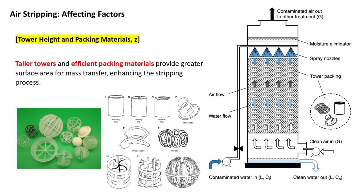Packing materials used in air stripping towers are generally categorized into two types: random packing and structured packing. Random packing consists of irregularly shaped pieces of material that are randomly dumped into the column. Common examples include pall rings, which are cylindrical rings with multiple openings to increase surface area and enhance liquid distribution; raschig rings, which are cylindrical hollow tubes that provide a moderate surface area for mass transfer; and saddle-shaped packing, curved pieces that reduce pressure drop while offering good surface area. These materials are cost-effective and easy to install, making them suitable for moderate flow rates and relatively simple applications. However, they can result in uneven distribution if not carefully managed, and may also clog over time in systems with high particulate loads.